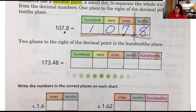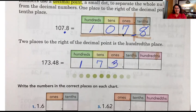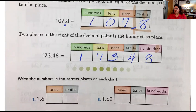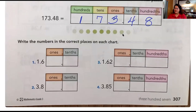Lola, can you do 173 and 48 hundredths? The one in the hundreds place, the seven in the tens place, three in the ones place, four in the tenths place, and eight in the hundredths place. Great work! All right, we're going to write the numbers in the correct places on each chart.